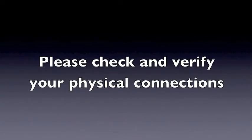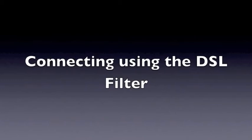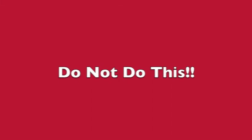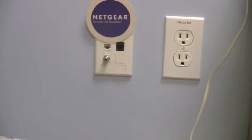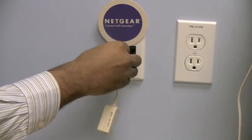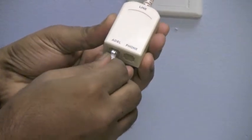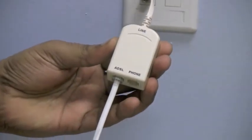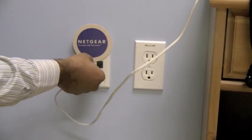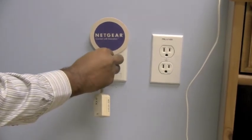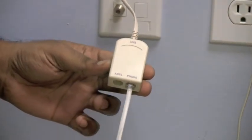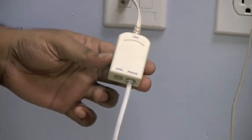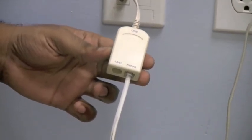We will begin by verifying the physical connection. First, we will check that the DSL filter is properly connected. Please do not do this — make sure that while installing the filter, the phone was not incorrectly plugged into the socket labeled ADSL on the filter. The correct way to connect it would be as follows: landline phones should be connected to the socket labeled Phone on the filter, and the Netgear gateway to the socket labeled ADSL.